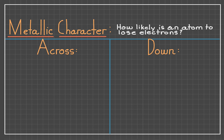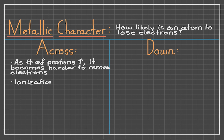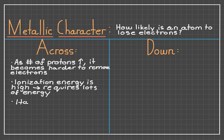And finally, last but not least, let's talk about metallic character, which is how much does an atom behave like a metal, or how easy is it to take away an electron, because metals are usually extremely reactive. As we go across the periodic table and add protons, it becomes a lot harder to take away electrons, as we previously determined with the ionization energy trend. This means that metallic character is going to decrease the further right we go, because your atoms become a lot harder to take electrons away from.